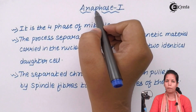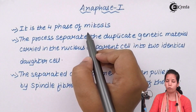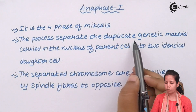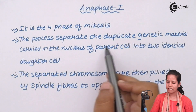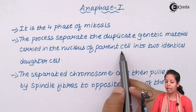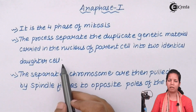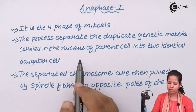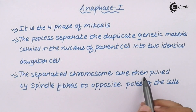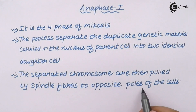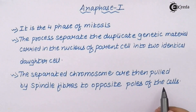What basically happens during anaphase is that it is the fourth phase of mitosis. The duplicated genetic material is carried in the nucleus of the parent cell into two identical daughter cells — that is the primary division where a parent cell divides into two daughter cells. This happens as the separated chromosomes are pulled by spindle fibers, or thread-like substances, to opposite poles, with the centriole region releasing spindle fibers that pull the chromosomes to the periphery of the cell.